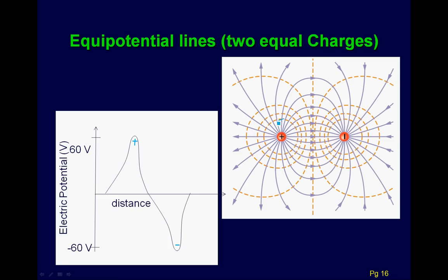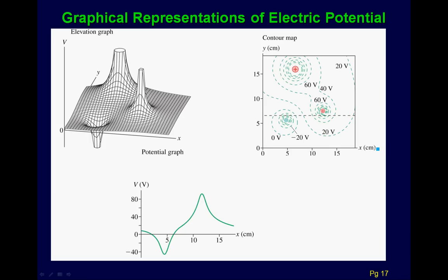For a positive charge and a negative charge: positive charges are like little hills, and negative charges are like little valleys. The equipotential lines are like topographic contours — walking around the hill at the same height. The electric field points downhill here too. You can always think of these pictures as topographic maps, and draw analogies to height.